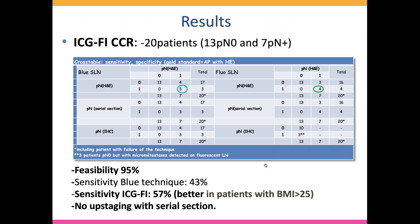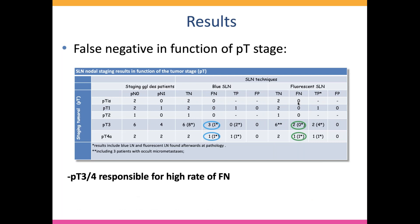Looking more in detail at the lymph node characteristics: seven patients had positive lymph nodes at pathology, and feasibility was good at 95%. However, three out of seven patients with positive lymph nodes were true positives, meaning there were four false negatives with the blue technique, and three false negatives with the fluorescent technique — a sensitivity of 43% and 57% respectively. No significant difference between the two techniques. In our series, we did not observe upstaging of patients using serial section, but it's a very small series.